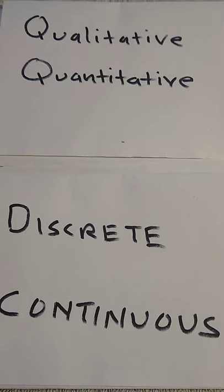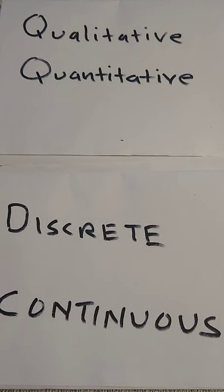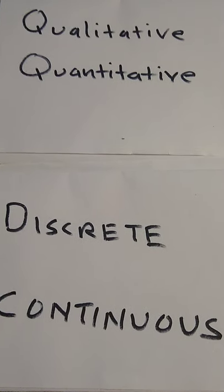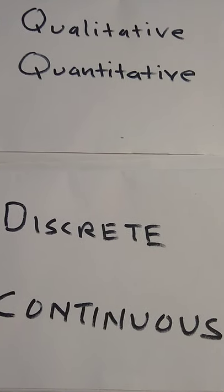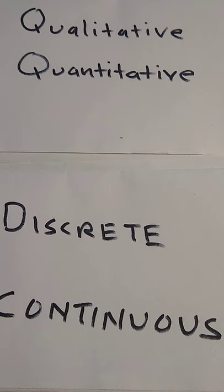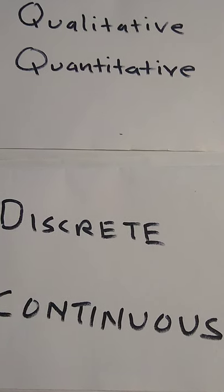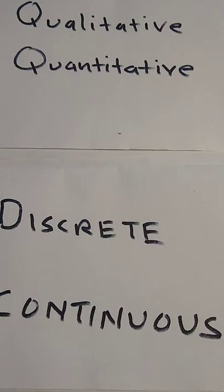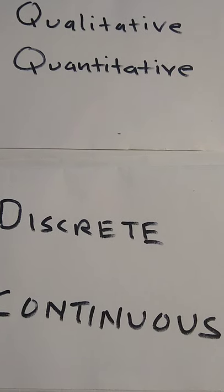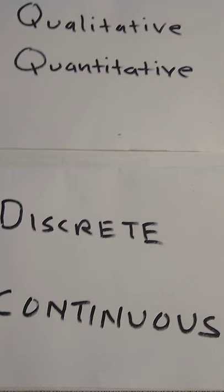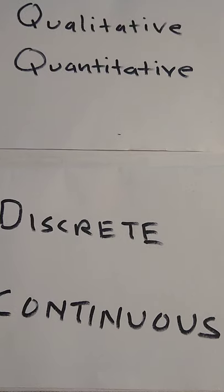In this video, we will learn about types and levels of measurement. Data can be put into categories such as words or numbers, countable and uncountable, and into levels of measurement.